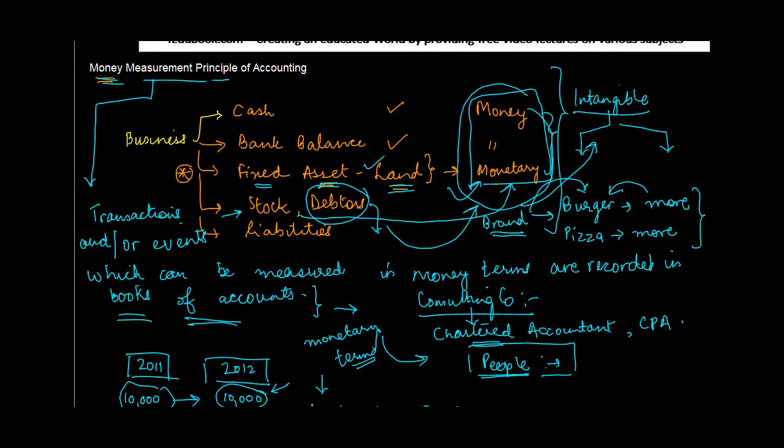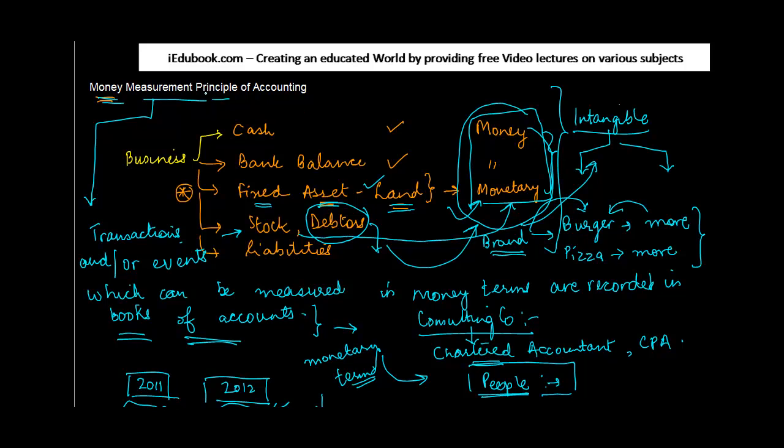Anyways, just to recapitulate, money measurement principle basically lays down that only transactions or events which can be expressed or measured in monetary terms are recorded in the books of accounts. Non-monetary transactions are excluded.